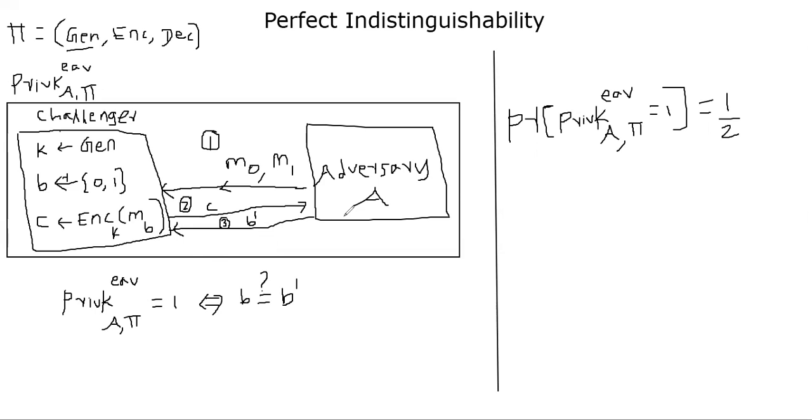So any adversary can just make a random guess. There are only two possibilities. Either it can be bit 0 or bit 1, meaning the challenger must have encrypted M0 or M1. So with the probability of half, adversary can win this game.